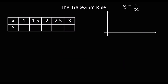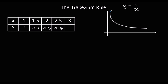Here's another trapezium rule question. This time we've got y = 1/x, which forms a reciprocal curve shape, and we're estimating the area under the graph between x = 1 and x = 3 using trapeziums with width 0.5. Filling out the table: 1/1 = 1; 1/1.5 = 2/3; 1/2 = 0.5; 1/2.5 = 0.4; and 1/3 = 1/3.